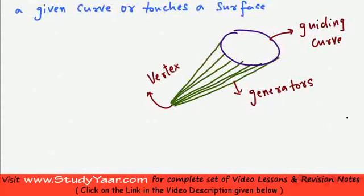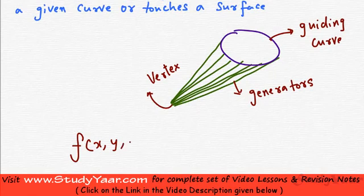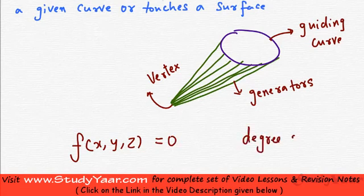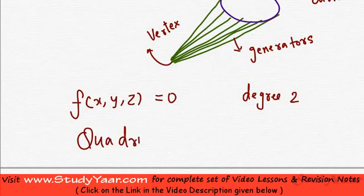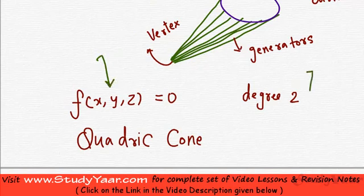In general, the equation of a cone is a function of x, y, z equal to 0. When this equation is of degree 2, we say our cone is quadratic. So what is a quadratic cone? A quadratic cone is a cone having an equation of this type with degree 2.